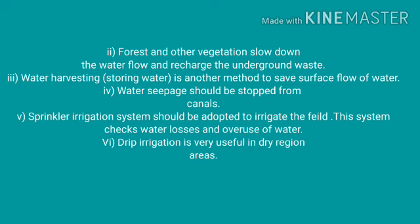Third point: water harvesting — storing water — is another method to save surface flow of water. Fourth point: water seepage should be stopped from canals. Sprinkler irrigation systems should be adopted to irrigate fields, as this checks water losses and overuse. Drip irrigation is very useful in dry region areas.